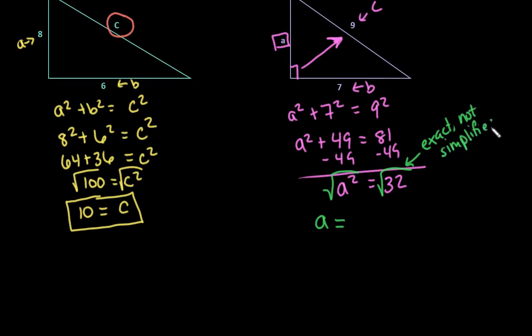You are going to want to simplify it. So what you can do is go through and find the largest perfect square that divides evenly into 32.